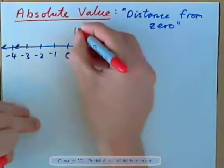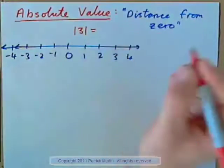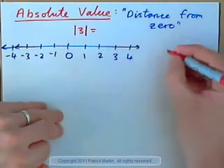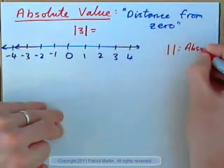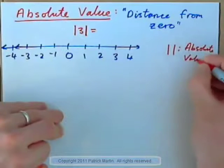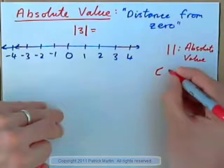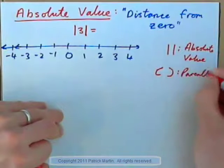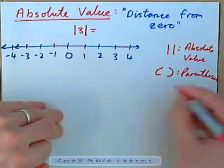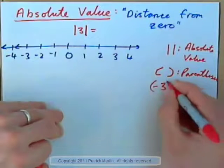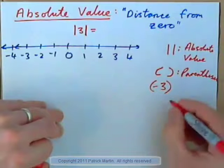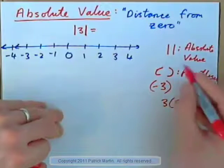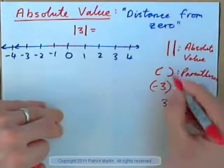The absolute value of three. Absolute value is written with two straight lines up and down — these are not parentheses. These two straight lines are for absolute value, whereas parentheses are curved. Parentheses are used for other things, like containing a negative three, or three multiplied by five — you might use parentheses, and that gives you 15. So, absolute value is straight lines up and down, and parentheses are curved.